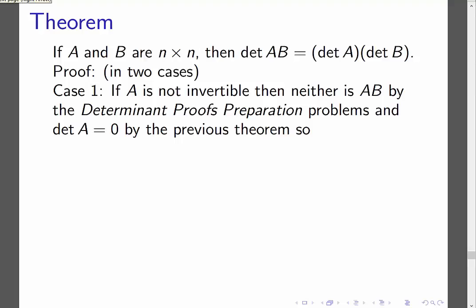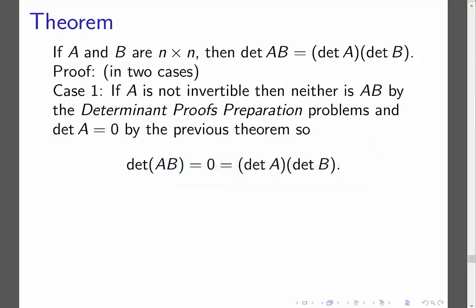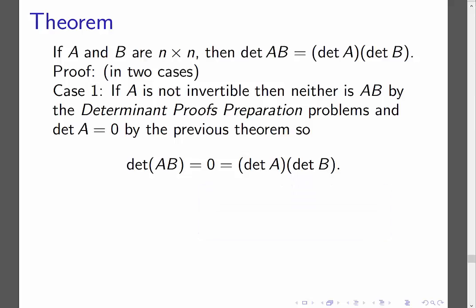By the previous video, if A is not invertible then the determinant of A equals zero. Similarly, since AB is not invertible, the determinant of AB equals zero. Therefore the determinant of A times the determinant of B must also equal zero. In this case, both sides are equal to zero and therefore they are equal to each other.